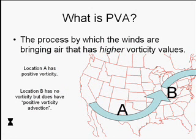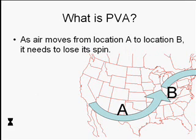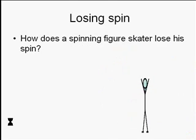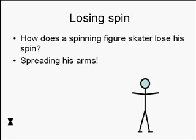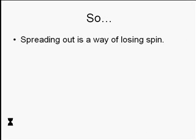What exactly is positive vorticity advection? It's the process by which winds are bringing air that has higher vorticity values. Region A is at the base of this trough — it has positive vorticity. Region B has no vorticity; the winds are moving in a straight line at that location, but it does have positive vorticity advection. Air is moving towards location B that has positive vorticity. Now, as air moves from location A to location B, it needs to lose its spin. If it doesn't lose its spin, it won't make that straight path and then head into the ridge — it will just curve into a big circle. So a region with positive vorticity advection is not increasing its spin; rather, it's an area where air needs to lose its spin. How do you lose spin? Well, if you're a figure skater, you lose your spin by spreading your arms out. This is a conservation of angular momentum thing.